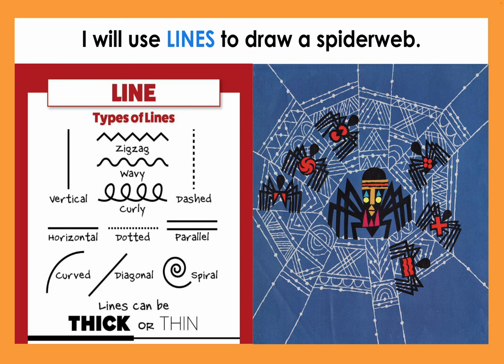I will use lines to draw a spider web. If you look at the example of the spider web, you can find many different types of lines. You could find vertical lines, horizontal lines, diagonal lines, curved lines, dotted lines, parallel lines, and even diagonals. Let's see how many different lines you can create in your web.